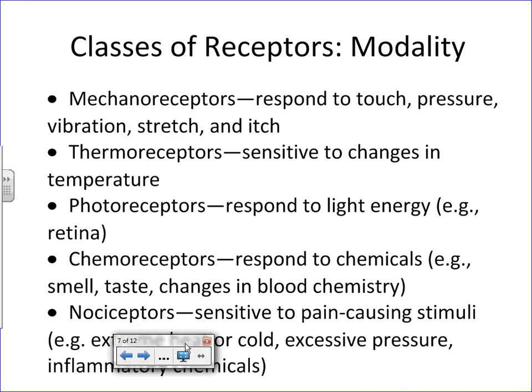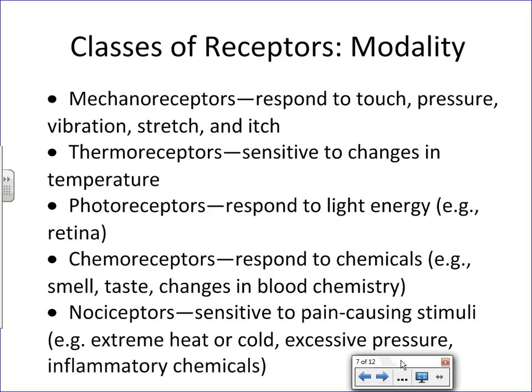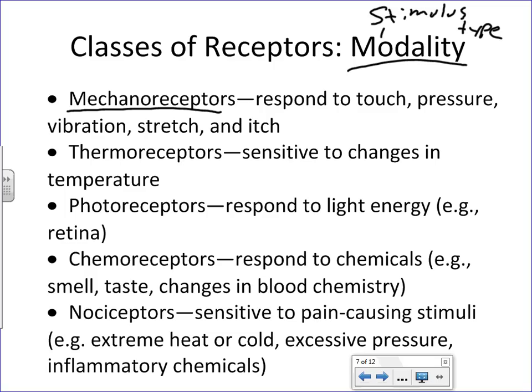Probably the most common way of classifying receptors is by modality — meaning stimulus type. One type of receptor is the mechanoreceptor, which is sensitive to touch, pressure, vibration, stretching, and itching.